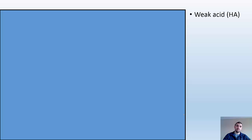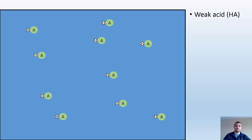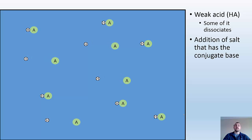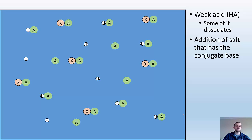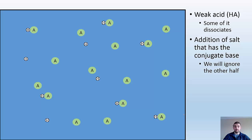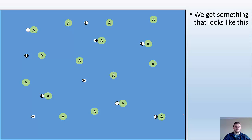Let's say I'm going to make a buffered solution. I start with a weak acid, which I'm going to call HA. I put it into my solution and some of it's going to dissociate and ionize. I'm going to then add a salt that has the conjugate base of my weak acid — here I've got a salt XA, where A is my conjugate base. We can ignore the X because it's not going to be involved in the chemistry. So we have our weak acid, its conjugate base, and we get something that looks like this.